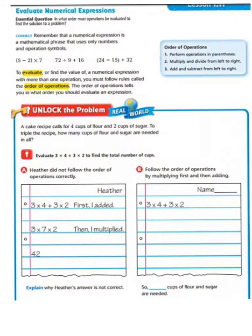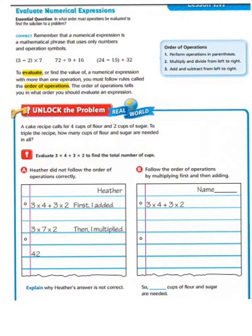Let's take a look at some other terminology. To evaluate, or find the value of, a numerical expression with more than one operation, you must follow rules called the order of operations. The order of operations tells you in what order you must evaluate an expression.